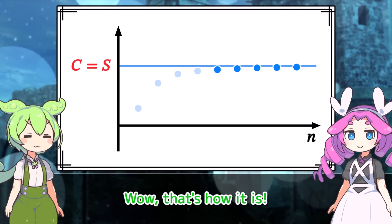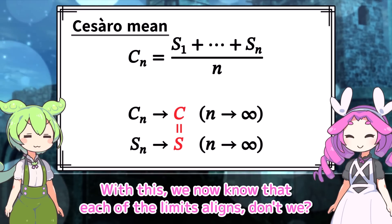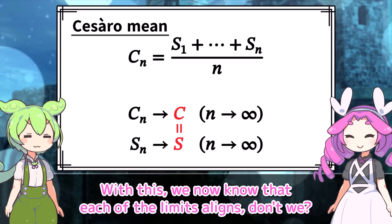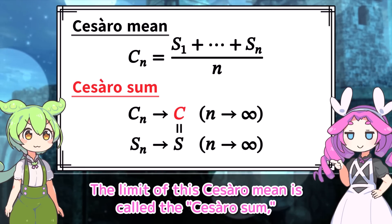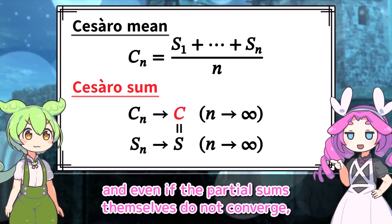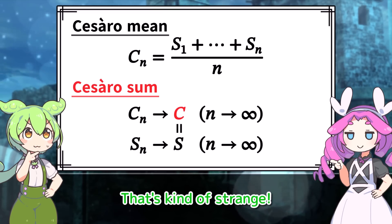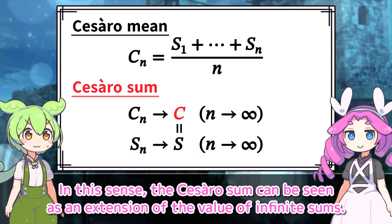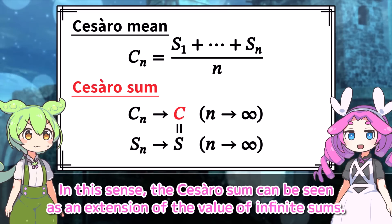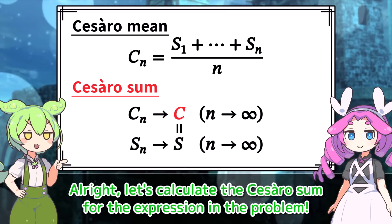We now know that each of the limits aligns. The limit of this Cesaro mean is called the Cesaro sum, and even if the partial sums themselves do not converge, the Cesaro sum can sometimes converge. In this sense, the Cesaro sum can be seen as an extension of the value of infinite sums. Alright, let's calculate the Cesaro sum for the expression in the problem.